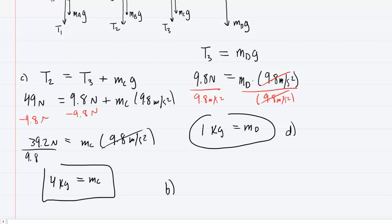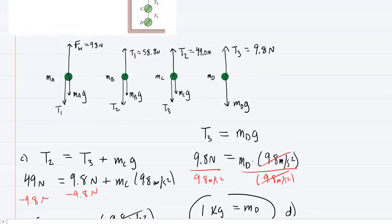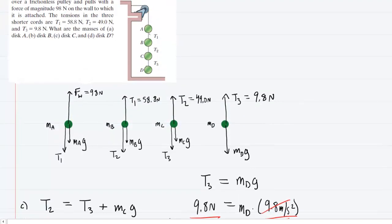We'll just proceed in a similar manner. We go back to disk B now. Disk B was attached to T1 and T2 and that's why in the free body diagram we have T1 pointing up on that disk and T2 pointing down on that disk.